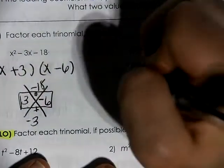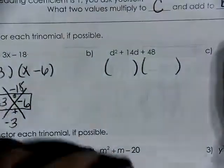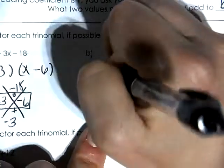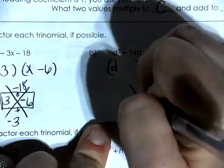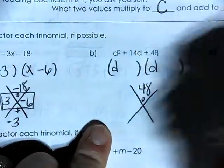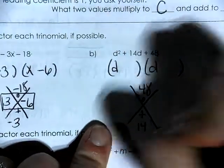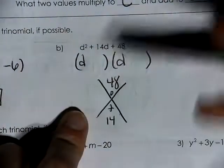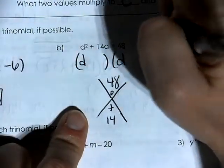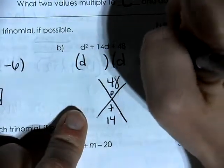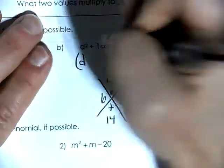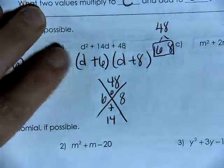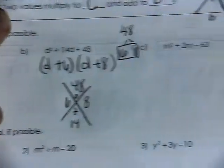For letter B, I write the structure with a d and a d. I ask: what two numbers multiply together to equal 48 yet add to equal 14? When I think of 48, the first thing that comes to mind is 6 times 8. And 6 times 8 is 48, and 6 plus 8 equals 14. So plus 6 and plus 8 go inside the parentheses.